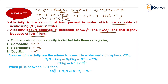Now, what are the sources of alkalinity? Suppose there is a large amount of CO₂ in the atmosphere. When atmospheric CO₂ reacts with water, H₂CO₃ is formed — a very weak product. It dissociates into H⁺ and HCO₃⁻, which is bicarbonate alkalinity. This bicarbonate alkalinity is again very weak, so it further dissociates into H⁺ and CO₃²⁻, creating carbonate alkalinity.